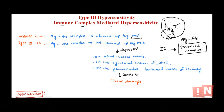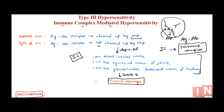In type 3 hypersensitivity, the antigen is bound by antibody but this complex is not cleared up by macrophages. Instead, these immune complexes circulate in the blood and have the tendency to get deposited in blood vessel walls, in joints, or in the basement membrane of the kidney. Because they are not being cleared, they get deposited and trigger further immune responses at that particular site, leading to tissue damage.